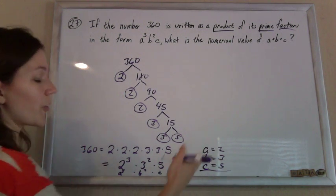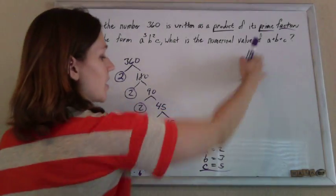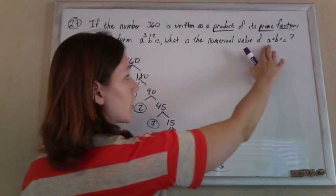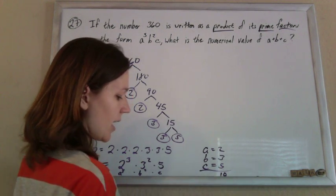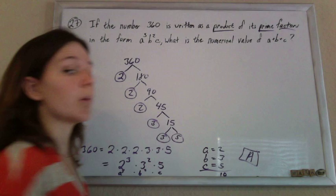And of course, we're not done yet, because they don't want to know what a, b, and c are. They want to know the sum of a, b, and c. So just add them all up, and you get 10, and that's your answer, and you are done.